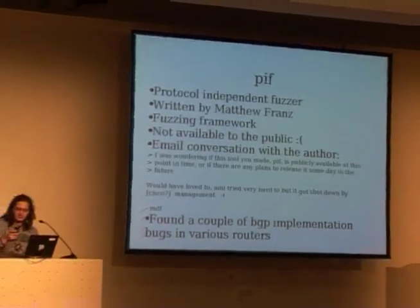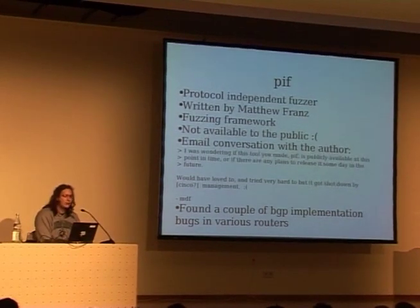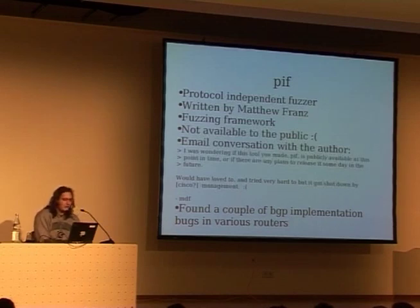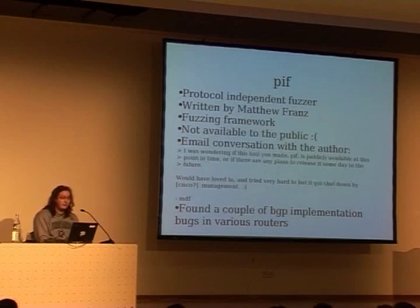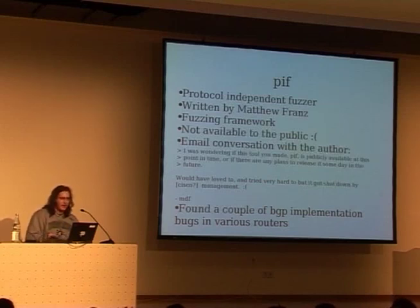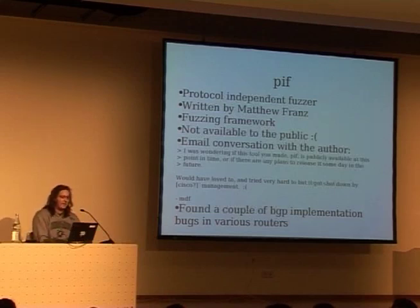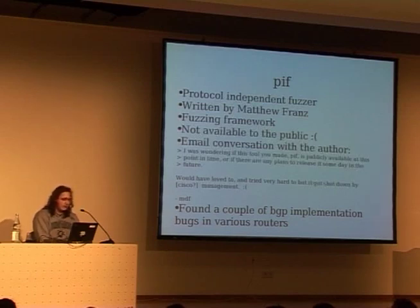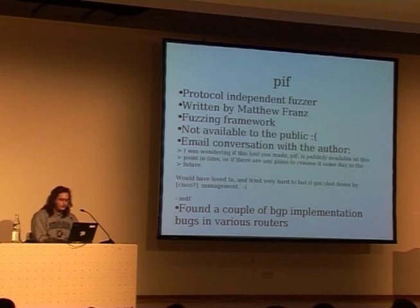The next fuzzing framework I want to cover is the Protocol-Independent Fuzzer, written by Matthew Franz. Unfortunately it's not available to the public — I've never used it either. But in 2004, he made a Black Hat presentation about examining the security of BGP and how it's implemented in several routers. Throughout the slides you see cool things he does with his fuzzer. The tool was never released because Cisco management didn't like it. From the slides, it says it found four or five BGP-specific implementation bugs.